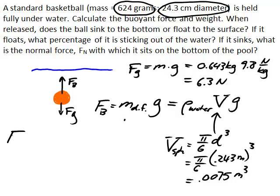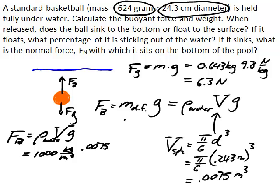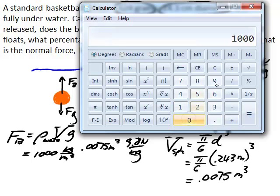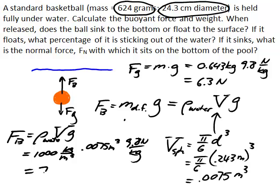Okay, so the buoyant force is density of the water times v times g. And so we have 1,000 kilograms per cubic meter times 0.0075 cubic meters times 9.8 newtons per kilogram. And that gives us 74 newtons.